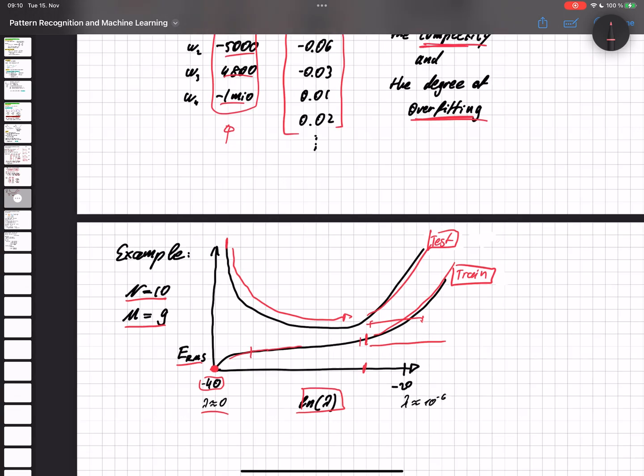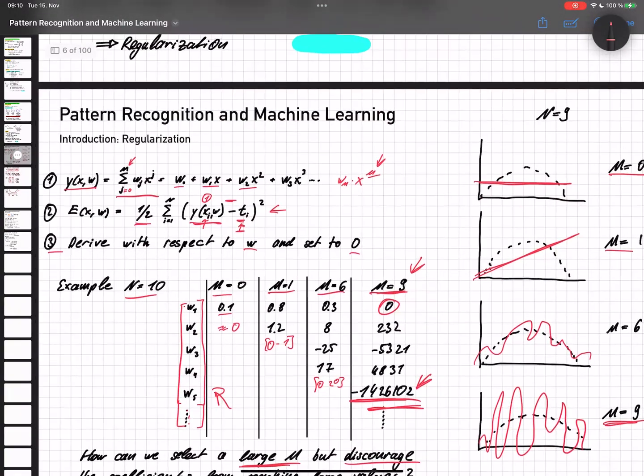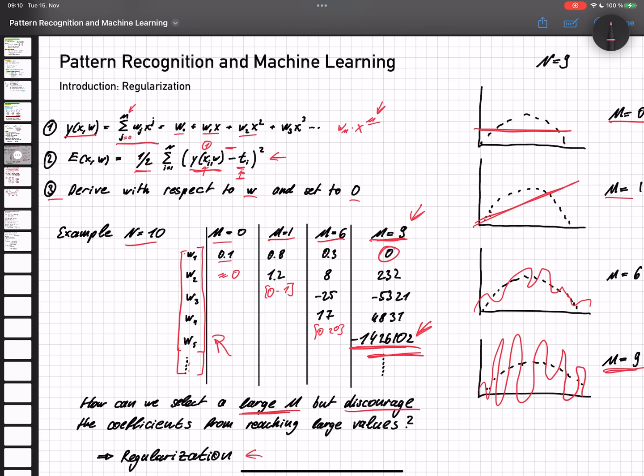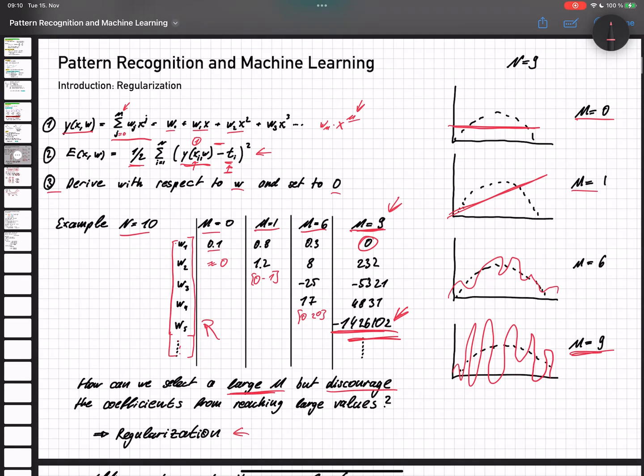So let's just summarize again. We want to have an option that we can set a large value for our degree m, for example 9, but not fall into the regime of overfitting. And we see that we are in the regime of overfitting if we have large values in our parameters w.